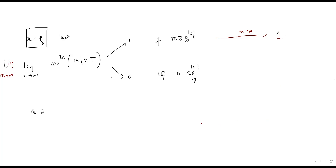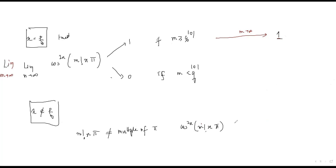For x irrational, M factorial times x divided by π is never an integer — never. Hence cos squared of M factorial × x × π is always less than 1 and greater than 0 for any fixed M. And hence the inner limit goes to zero, because something always less than 1 raised to the power N as N→∞ must go to zero. That's the basic idea.